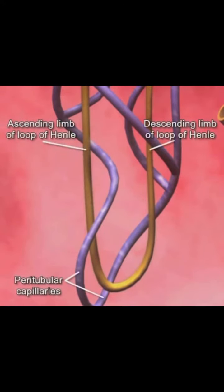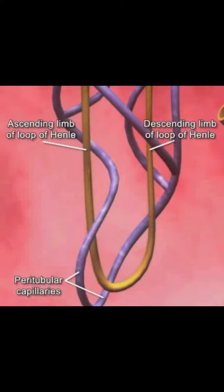In the loop of Henle, the pattern repeats itself. Sodium and chloride are transported out of the tubule into the blood. Then, water follows.